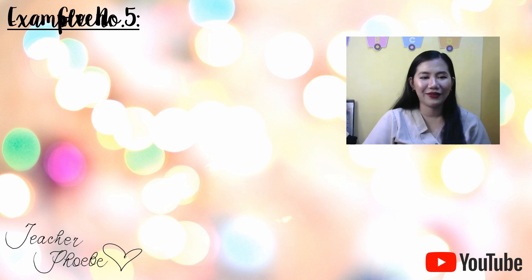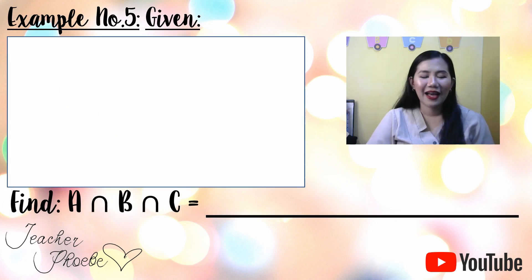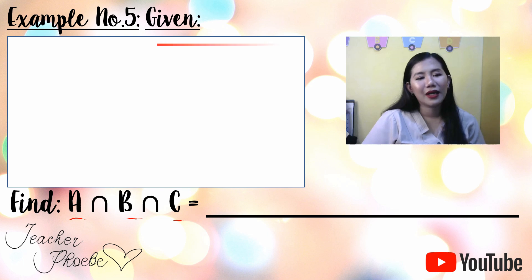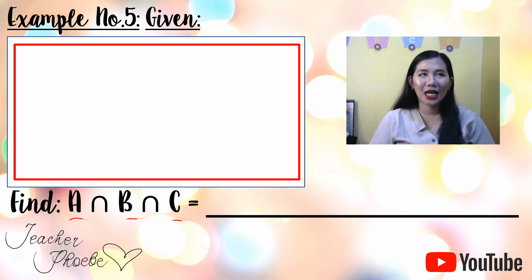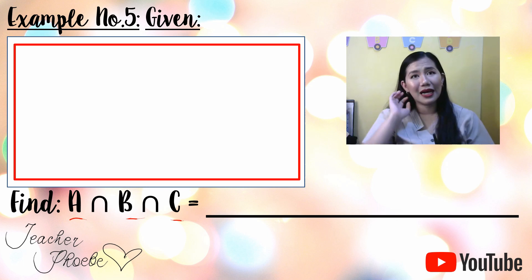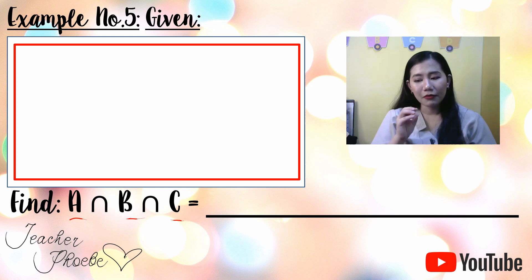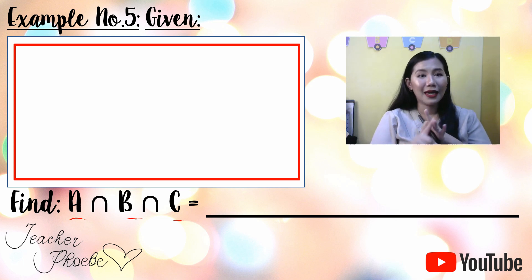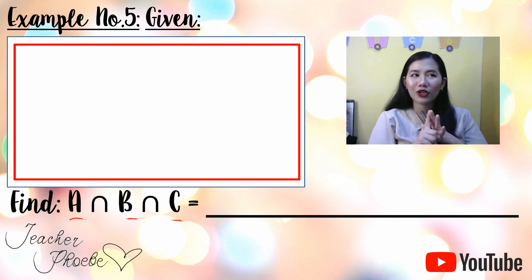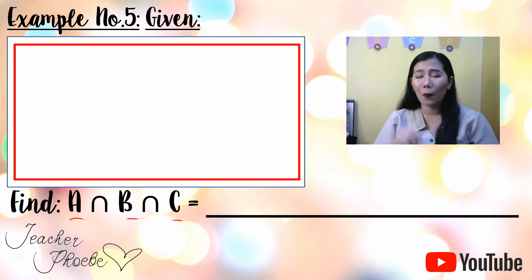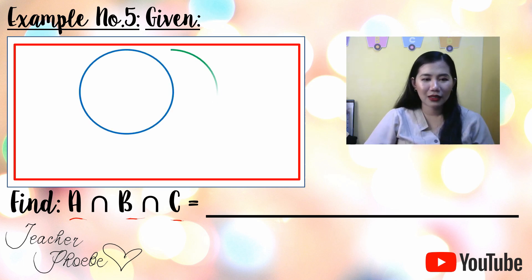For Example Number Five, find the intersection of A, B, and C — three sets this time. As explained in Part One, for an element to belong to the intersection of three sets, it must appear in all three: Set A, Set B, and Set C. Examples 1 through 4 involved intersections of only two sets; now we look at three.